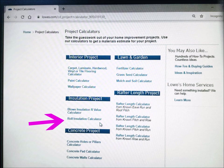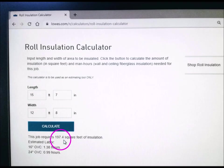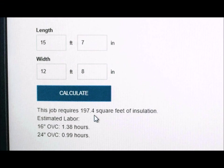For this project I used the roll insulation calculator. I entered the measurements from my room, clicked calculate. So for my room I need 197.4 square feet of insulation, so that means I need two rolls.